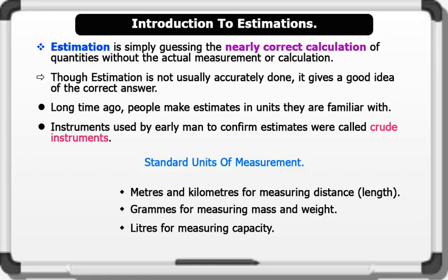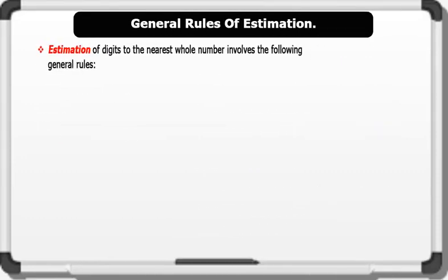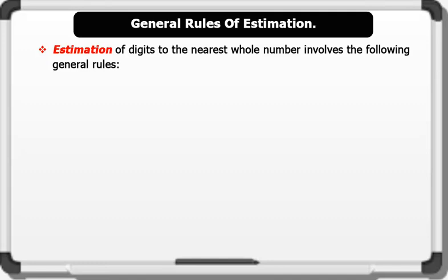Let's see the general rules of estimation. Estimation of digits to the nearest whole number involves the following general rules. Look at the digit to the right of the digit you want to estimate.